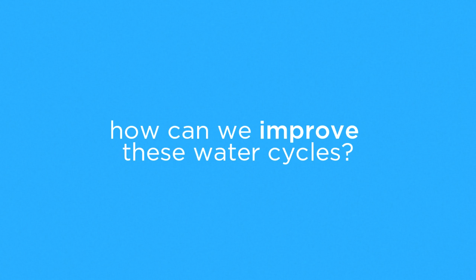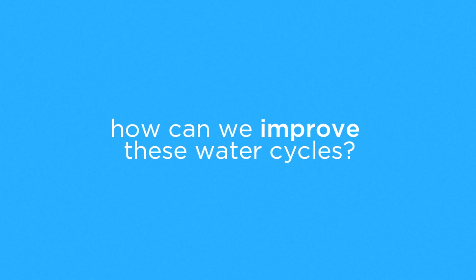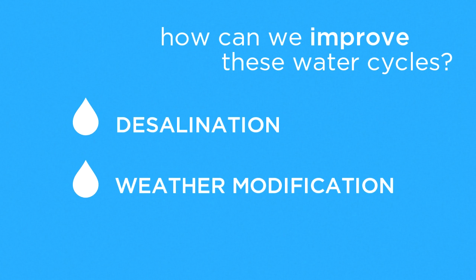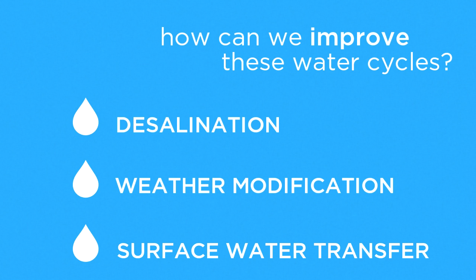How can we improve these water cycles? Let's examine three ways: desalination, weather modification, and surface water transfer.